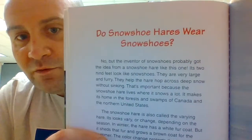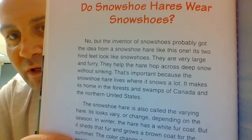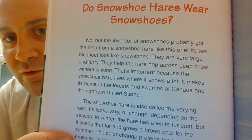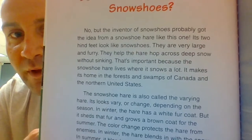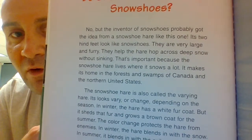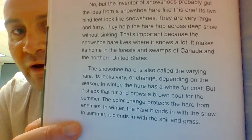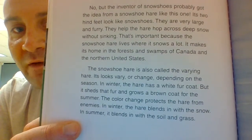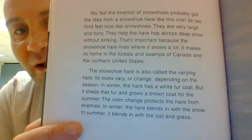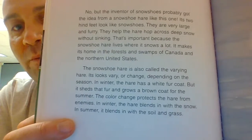Snowshoe hare. Do snowshoe hares wear snowshoes? No, but the inventor of snowshoes probably got the idea from a snowshoe hare. Its two hind feet look like snowshoes — they are very large and furry, helping the hare hop across deep snow without sinking. The snowshoe hare makes its home in the forests and swamps of Canada and the northern United States. The snowshoe hare is also called the varying hare because it looks varying or changing depending on the season. In winter, the hare has a white fur coat, but it sheds that fur and grows a brown coat for the summer. The color change protects the hare from enemies — in winter it blends in with the snow, and in summer it blends in with the soil and grass.